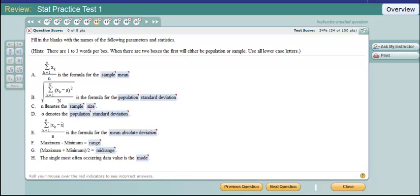Little n denotes the sample size. Sigma, Greek letter sigma, is a population standard deviation. S would be the sample standard deviation. If you sum up the absolute values of the distances from the mean from x divided by n, that's the mean absolute deviation. That's a sample mean absolute deviation there. Maximum minus minimum is the range. Maximum plus minimum divided by 2 is a point halfway between the maximum minimum. That's called the midrange. Range is a measure of variability. Midrange is a measure of center. The single most often occurring data value is the mode.